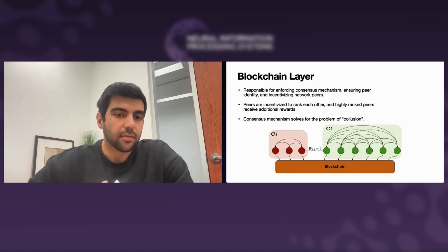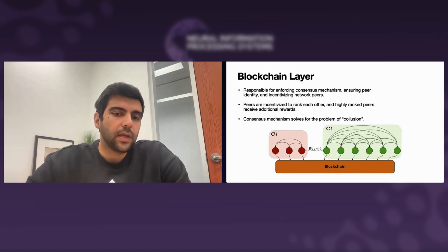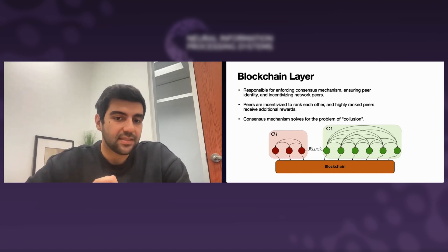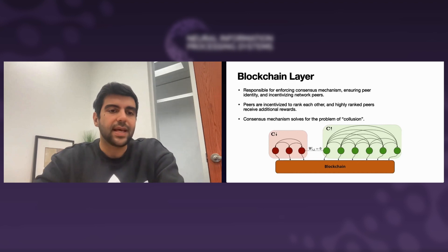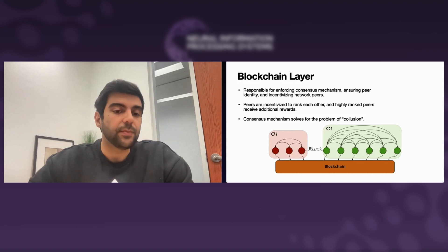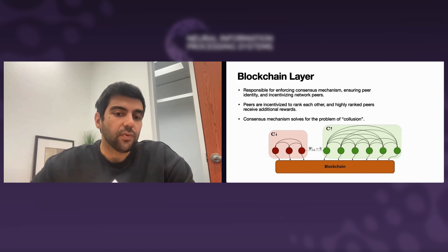The blockchain layer is responsible for incentivizing network peers, calculating peer ranks, and enforcing the consensus mechanism. Peers that have reached consensus are defined as peers with positive weight settings from more than 50% of stake in the network — meaning they've been positively weighted by more than 50% of their peers. When more than 50% of the incentive — the reward — is going to consensus peers, the chain can be considered as having reached consensus.